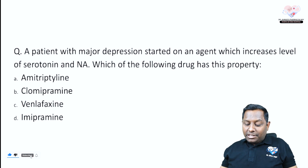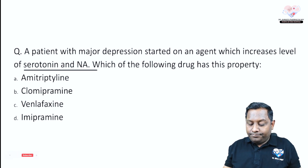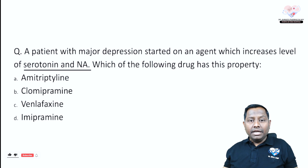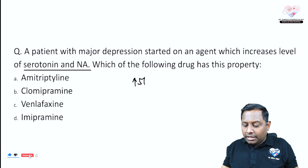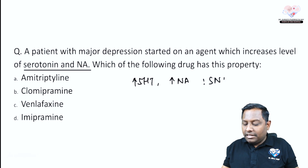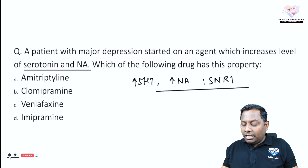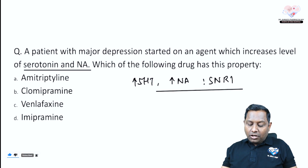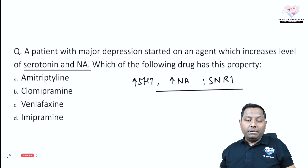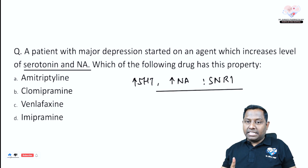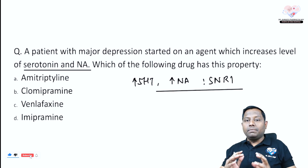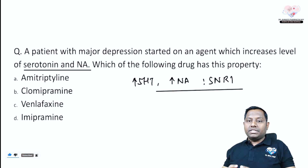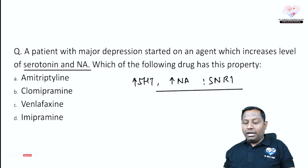Next question: A patient with major depression is started on an agent that increases the level of serotonin and noradrenaline. Increasing both serotonin and noradrenaline — they are talking about an SNRI, a serotonin-noradrenaline reuptake inhibitor. Which of the following agents has this property: amitriptyline, clomipramine, venlafaxine, or imipramine?